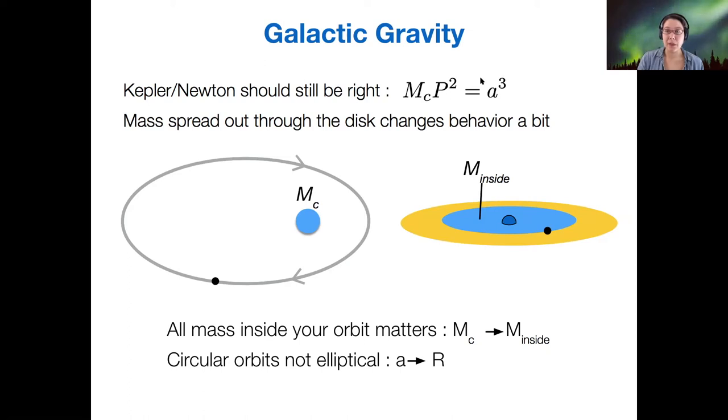So we'll replace our semi-major axis here with R, where R is going to be our distance from galactic center. So for the sun, that is going to be eight kiloparsecs.